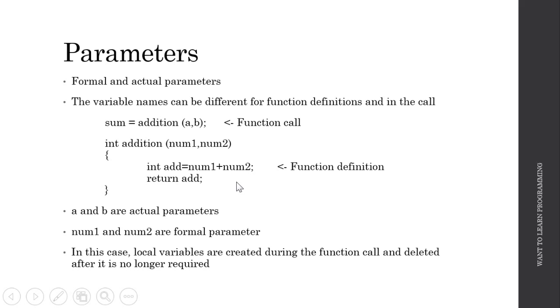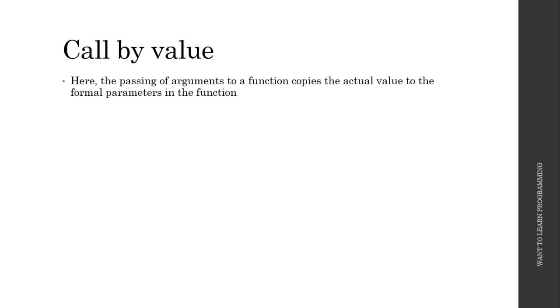So now let's see what is call by value and what is call by reference. Call by value is where the passing of arguments to a function copies the actual value to the formal parameters in the function.